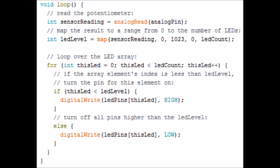And then what the next part is going to do is loop over the LED array. So for int thisLed equals 0, thisLed is less than ledCount, thisLed plus plus. And then if the array's element index is less than ledLevel, turn the pin for this element on.